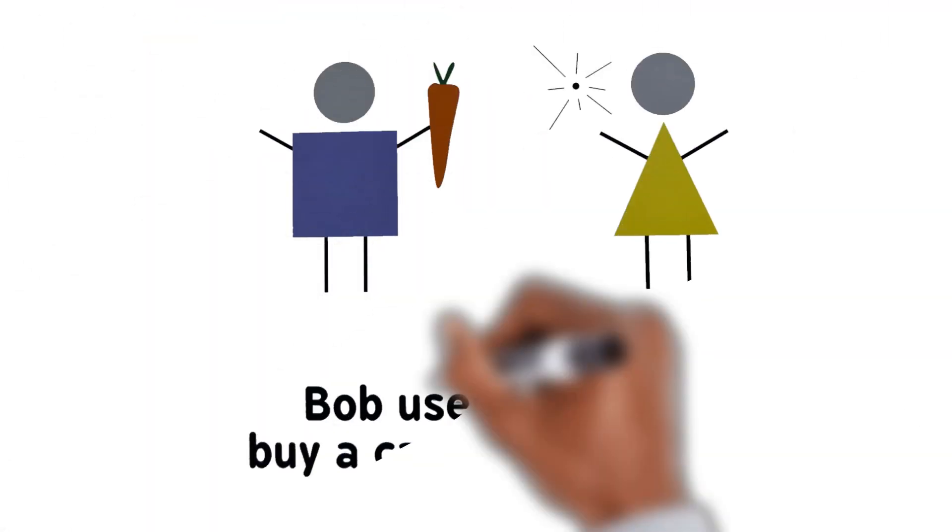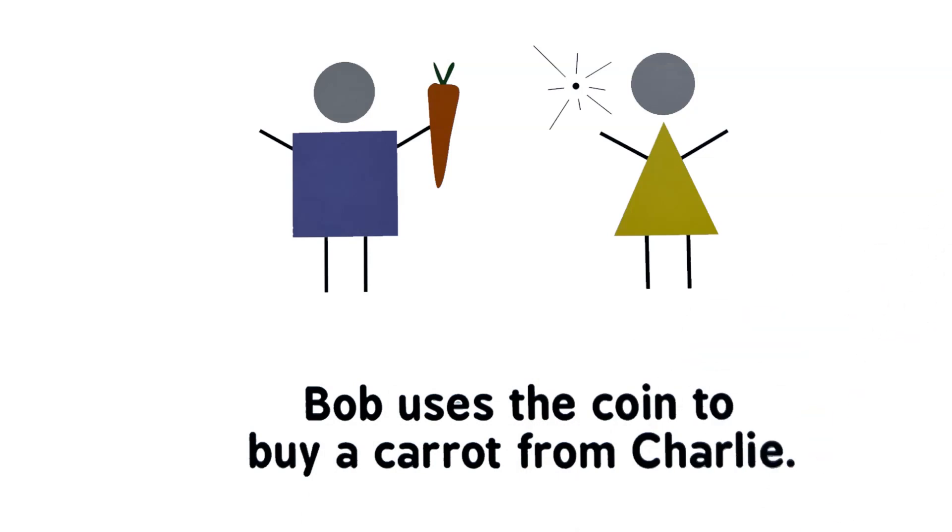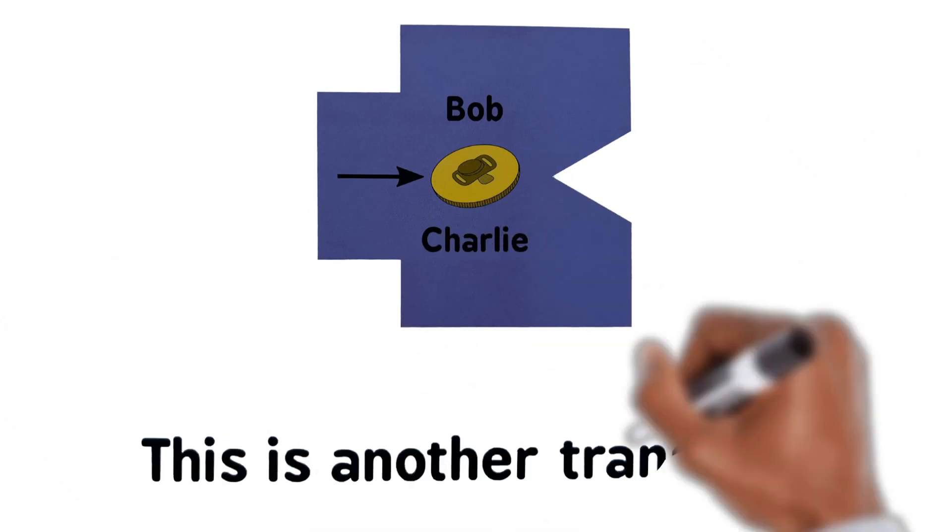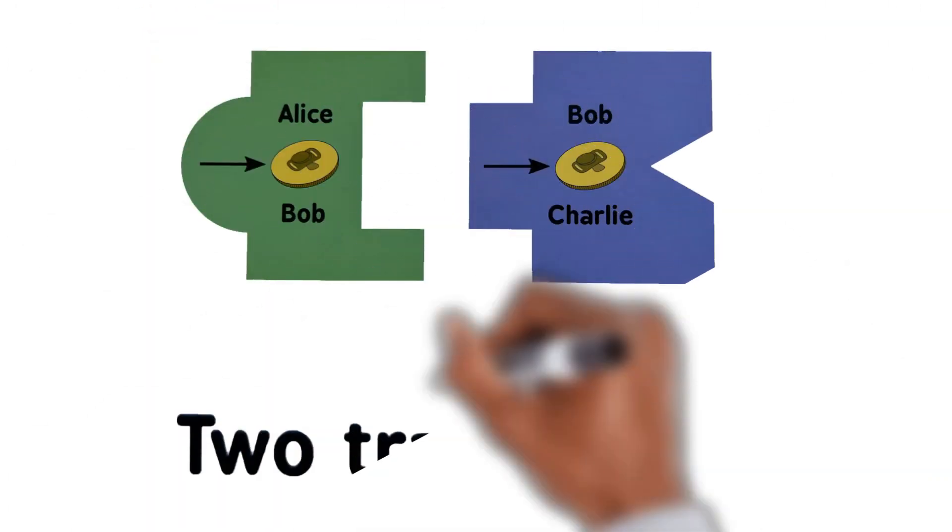Bob uses the coin to buy a carrot from Charlie. This is another transaction. Two transactions. They connect.